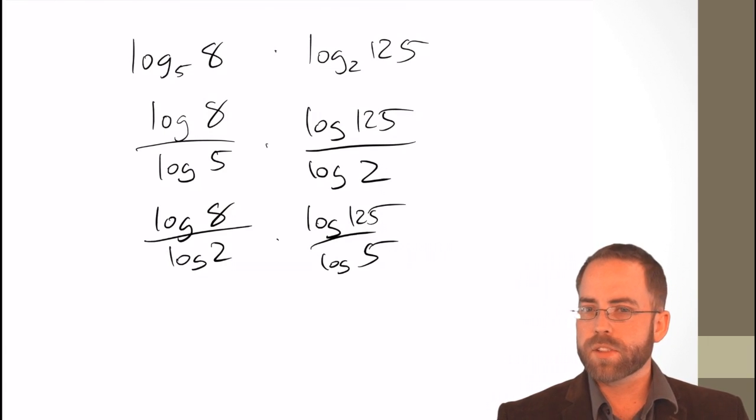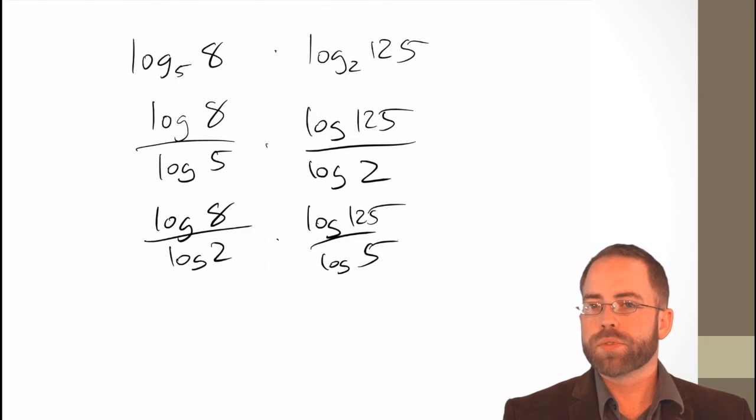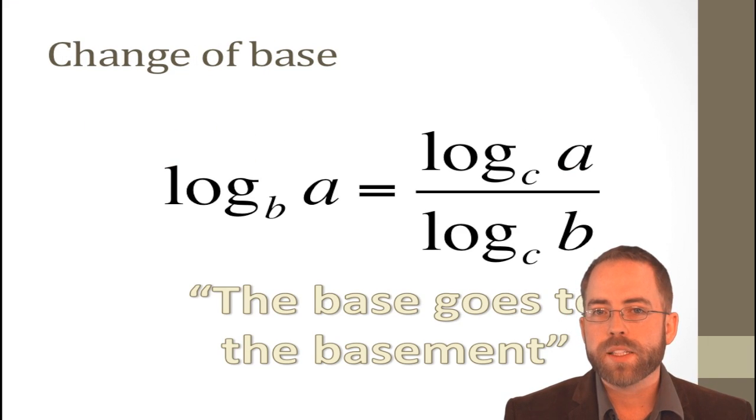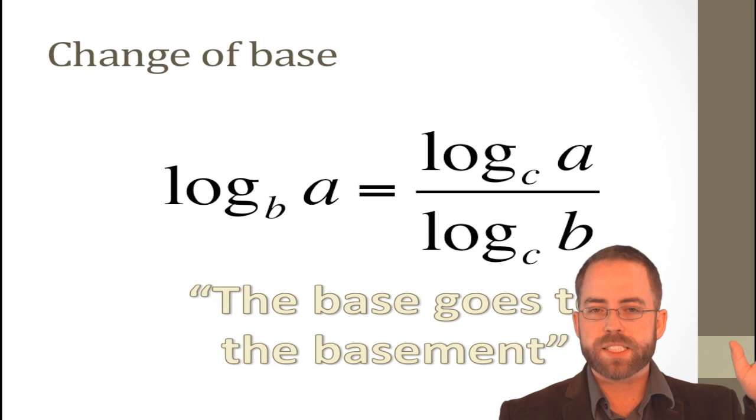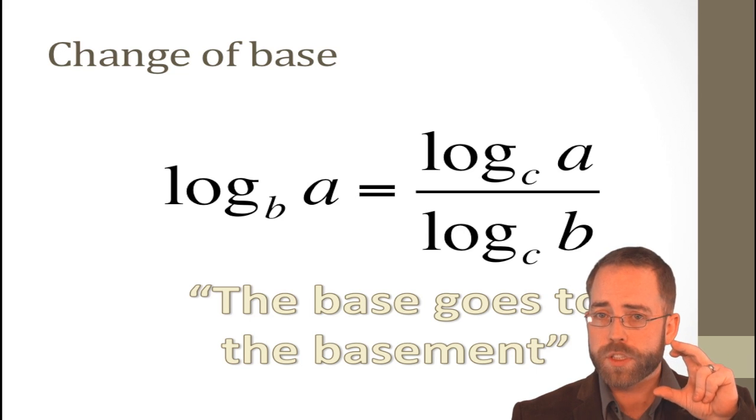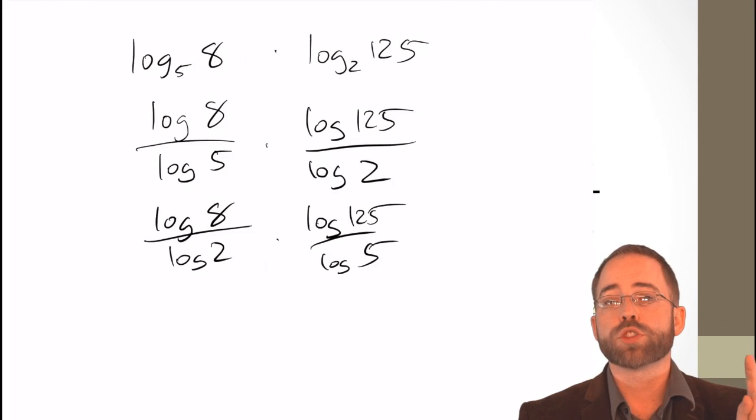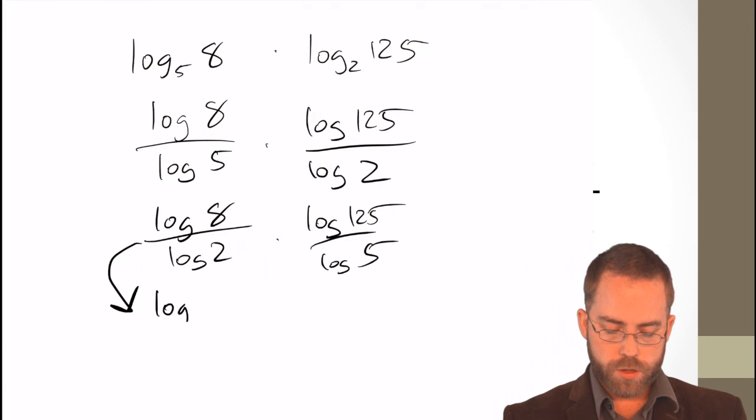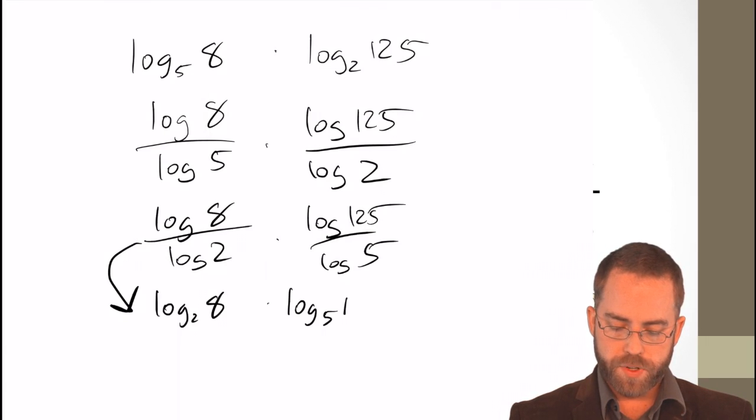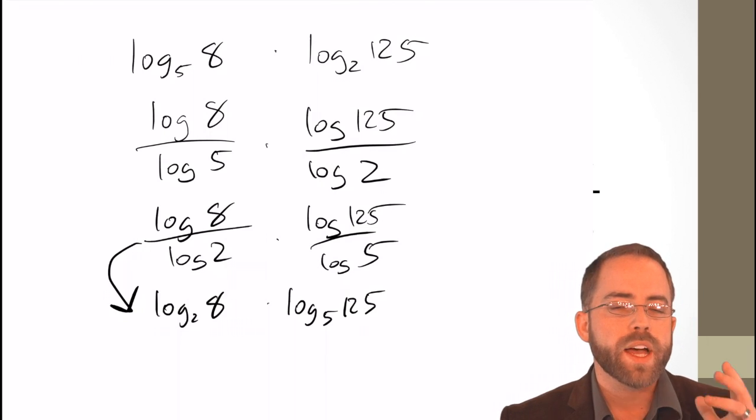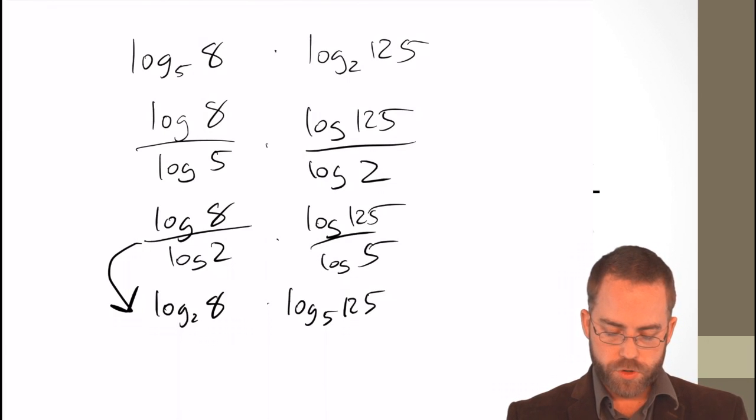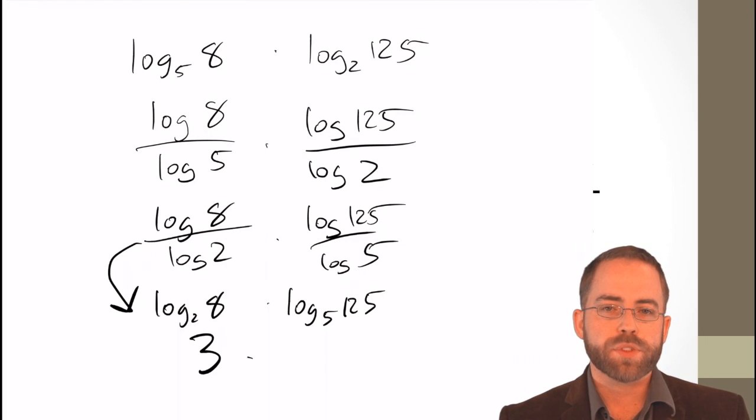Now, you can see I've got some numbers that kind of go together. This 2 and this 8, they kind of hang out. And this 5 and 125, they belong together. They're in the same family of exponents. So, look back at the change of base formula and recognize that it goes both ways. Not only do you have the ability to take a log and turn it into a fraction, but you have a fraction, as long as it has the same base in both logs, that you can turn into one log. So, what can I do with this first fraction? I can turn it into log base 2 of 8, and I can turn this one into log base 5 of 125. And now, we have English sentence questions that you can answer. What power do I put on 2 to get 8? Answer, 3.